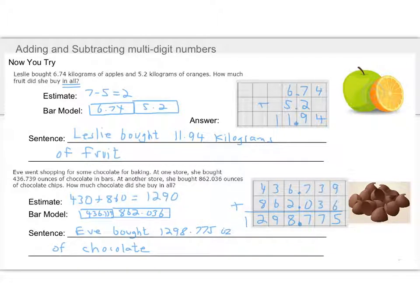Here are the answers for the first two. They're both addition problems because of the words in the first one, in all, that you can see here. It tells me I'm combining them. And we have the same thing here, in all, tells me that this is an addition problem. My bar graph is combining the two numbers in both places. Here are my answers. Now, the sentence is really simple. Just use the language of the problem. Leslie bought 11.94 kilograms of fruit. The second one, how much chocolate did she buy? Eve bought 1,298.775 ounces of chocolate. Keep it simple.